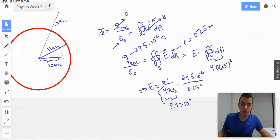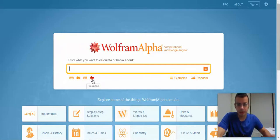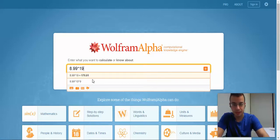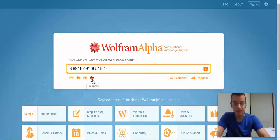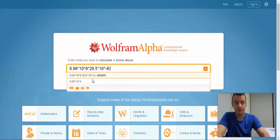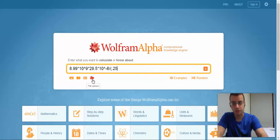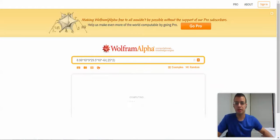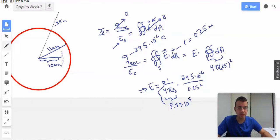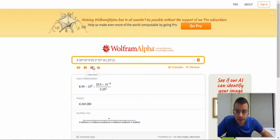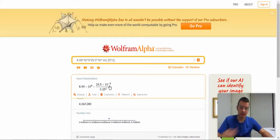Now I'm going to Wolfram. 8.99×10⁹ times 29.5×10⁻⁶ divided by 0.25 squared. Check that over real quick. 29.5, 0.25 squared, yep. 8.99×10⁹ times 29.5. I could have probably just rewritten that as 10³.